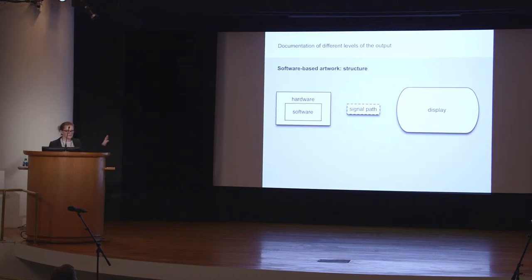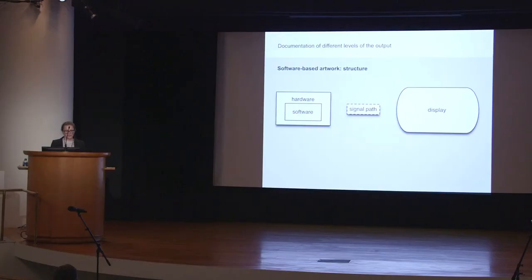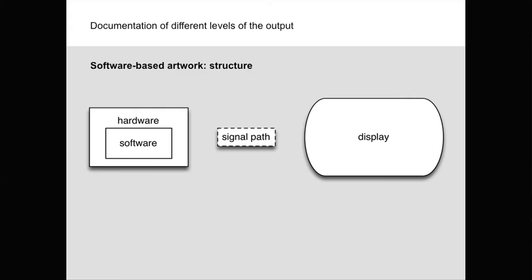We saw quite a similar scheme that Patrizia presented us yesterday. I reduced the artwork to four components: hardware, software, the display device, and the signal path in between. I did that because documentation of software-based art can be carried out on different functional levels of the artwork. We can document the output of hardware and software with or without the display device.